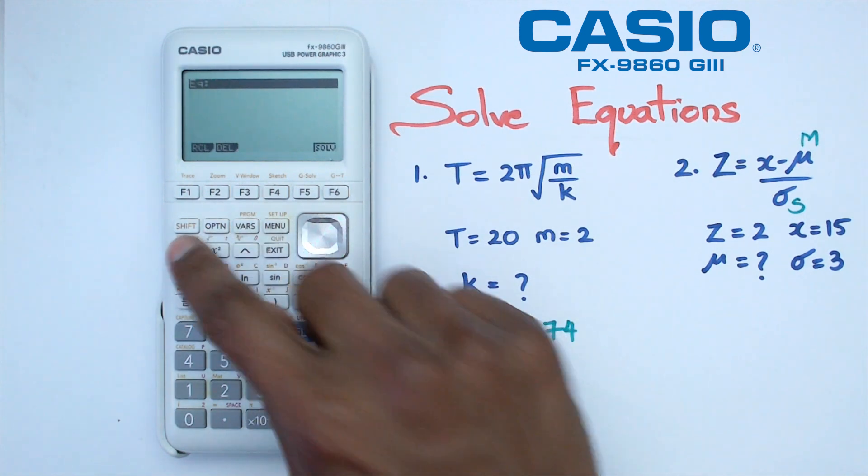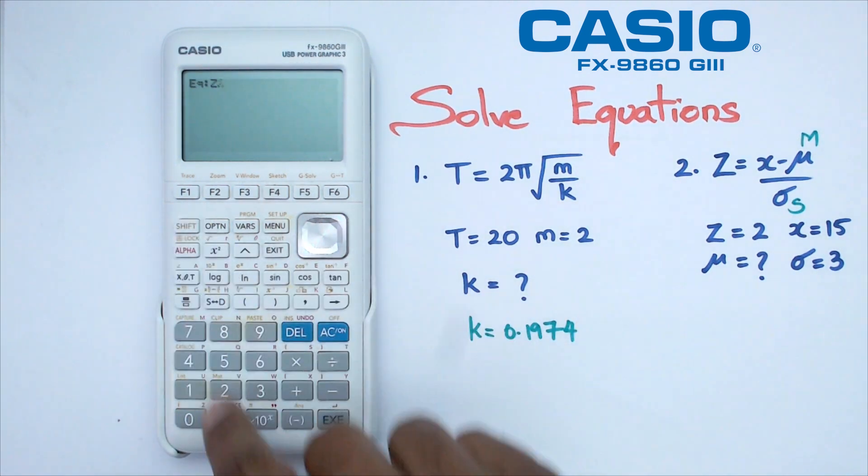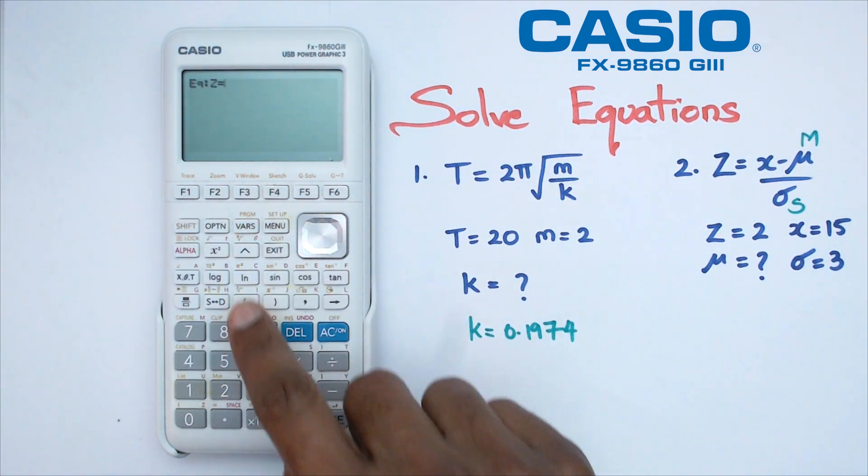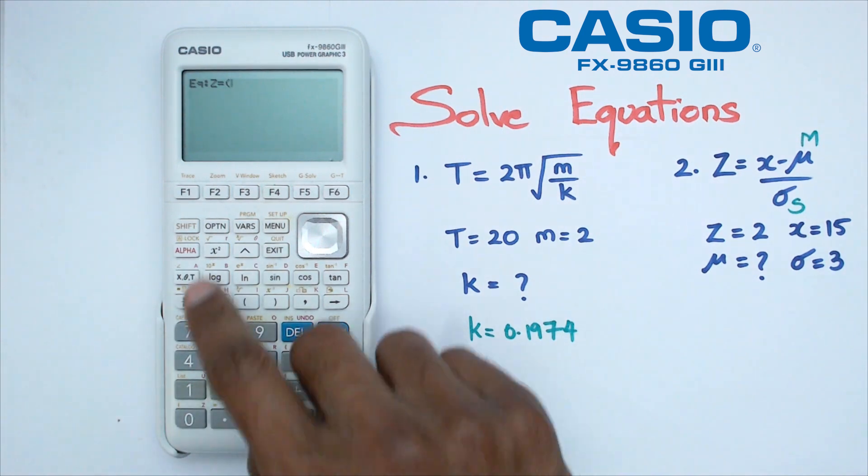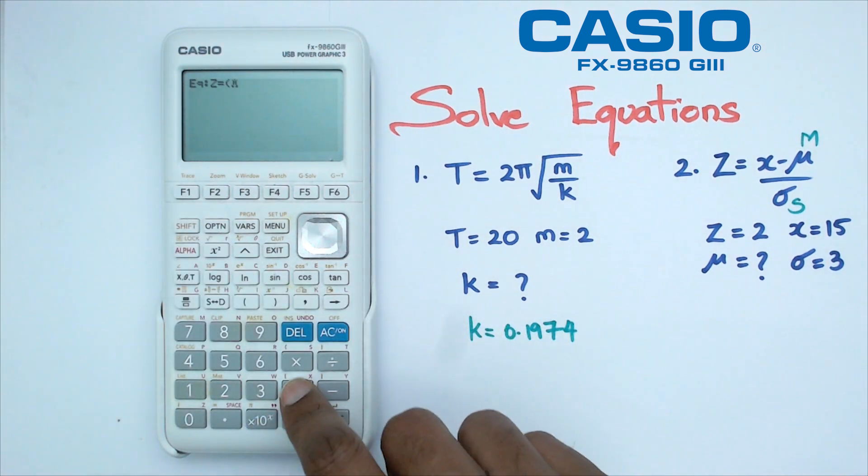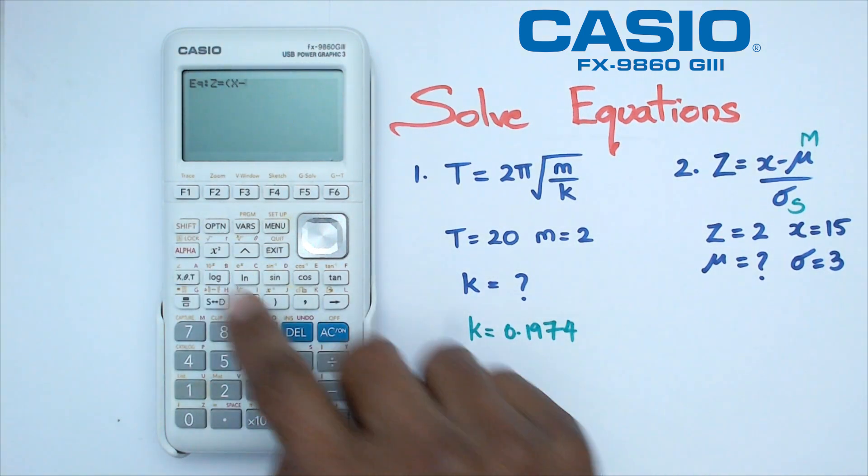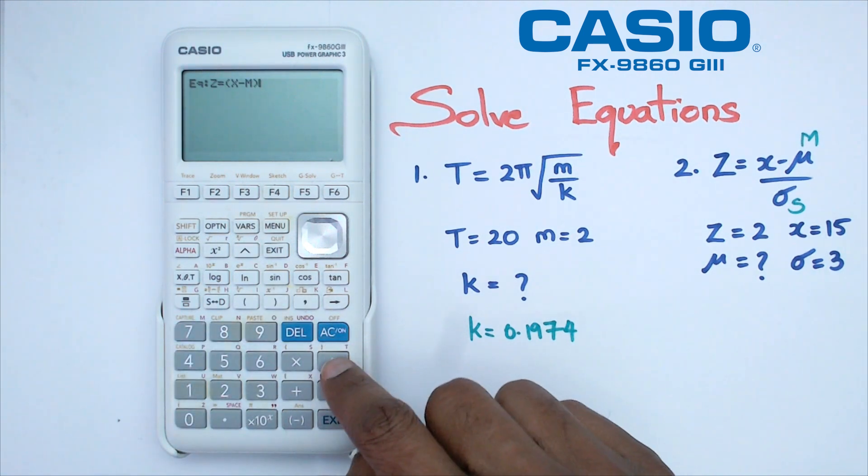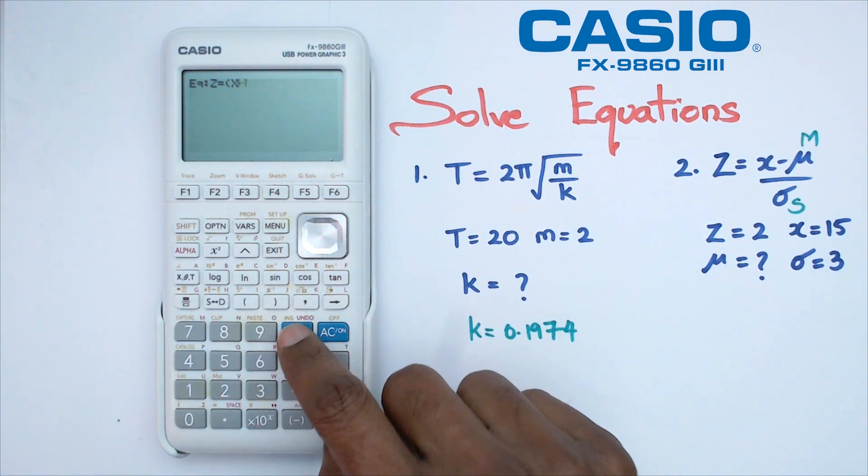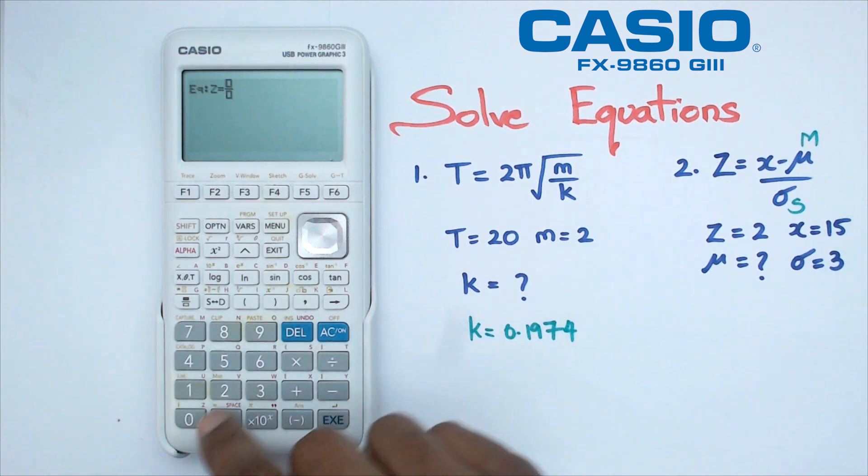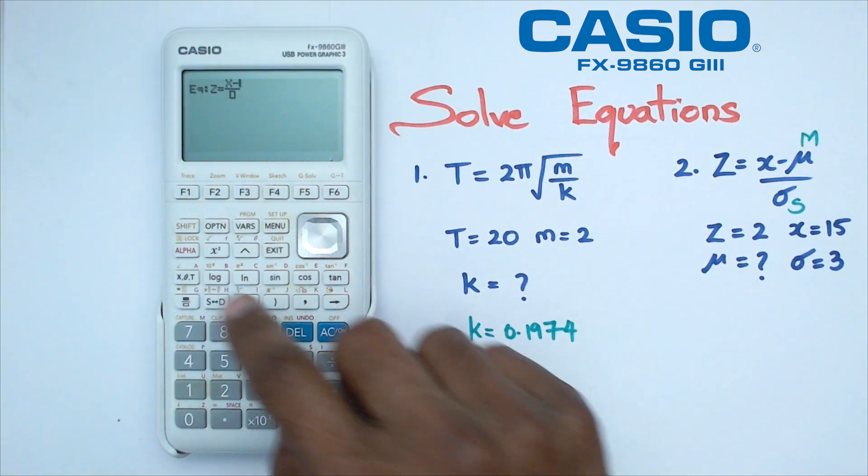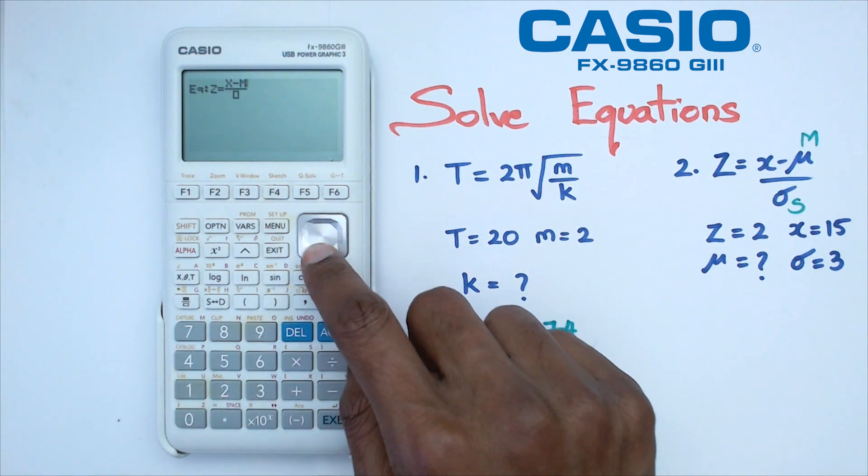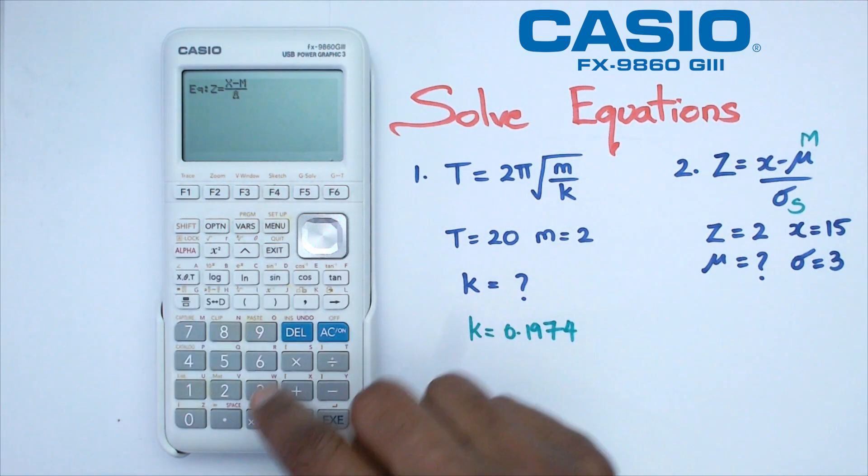I'm going to go alpha Z, and then shift decimal point. Z is equal to, I'm going to put the top line in brackets. I'm going to go alpha X minus alpha M, which is that. Then I'm going to divide this by, well, I could have actually done it like this. Let's go alpha X minus alpha M, and then we're going to divide it by alpha S.